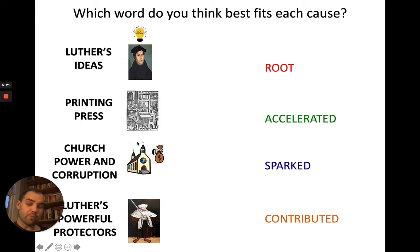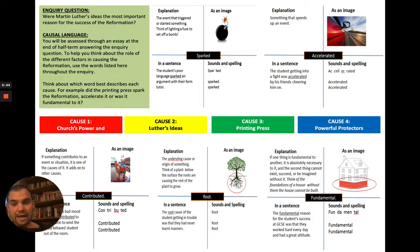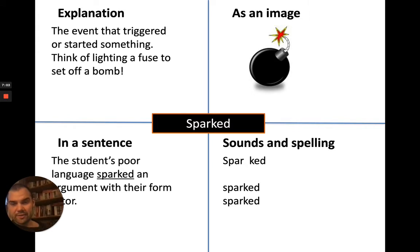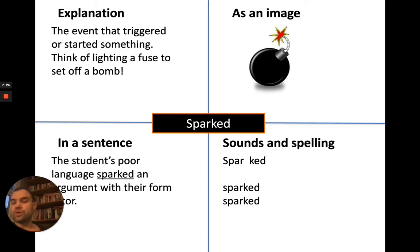There are different types of causes in history. Four key words are: root causes, causes that accelerate something, causes that spark something, and causes that contribute. These definitions are on the reverse side of your knowledge organizer. First, what does it mean when something sparks something? A spark is an event that triggers or starts something — like lighting a fuse to set off a bomb. It's almost like the final cause that triggers something happening.